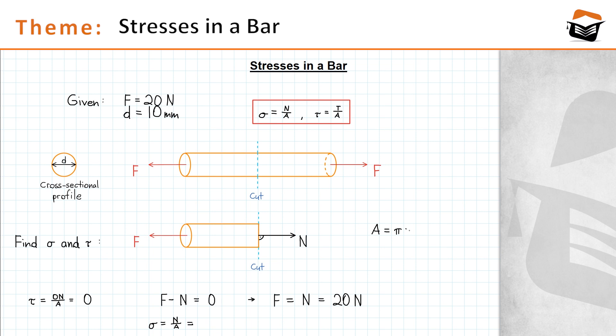pi times the radius squared. In our case the radius is simply half of the diameter, meaning that the radius is just five millimeters. So pi times five millimeters squared is equal to approximately 79 square millimeters.